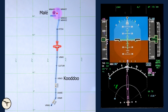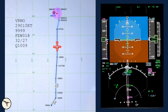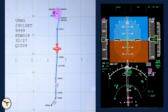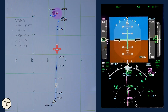The weather at Kodo is reported to be good and runway 18 is in use. The wind is from 290 degrees with 10 knots. We will have a tailwind component, but the runway is 1800 meters long and it is well inside the tailwind limitation of 10 knots. The temperature is 3.2 and QNH 1009.